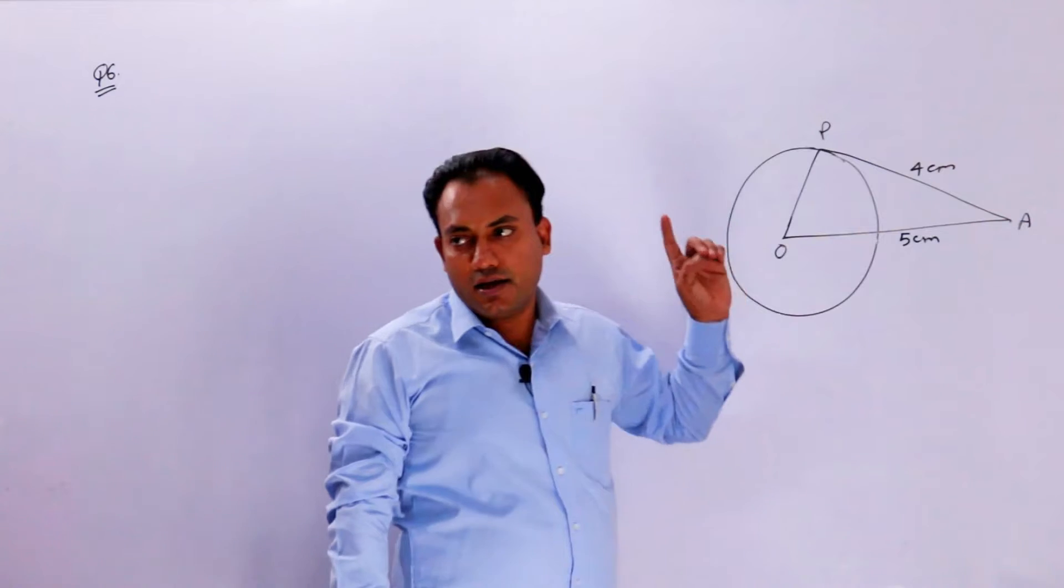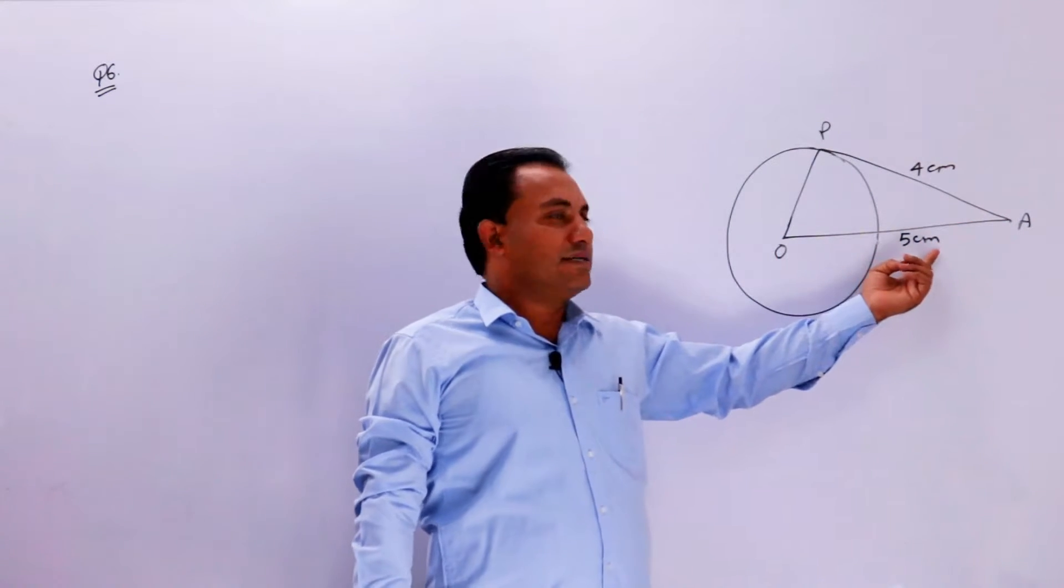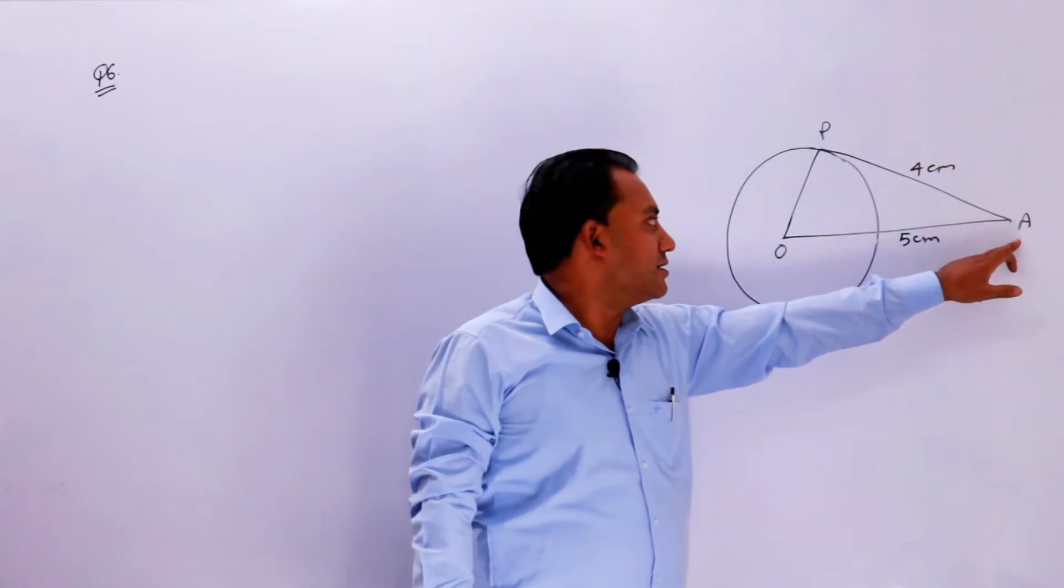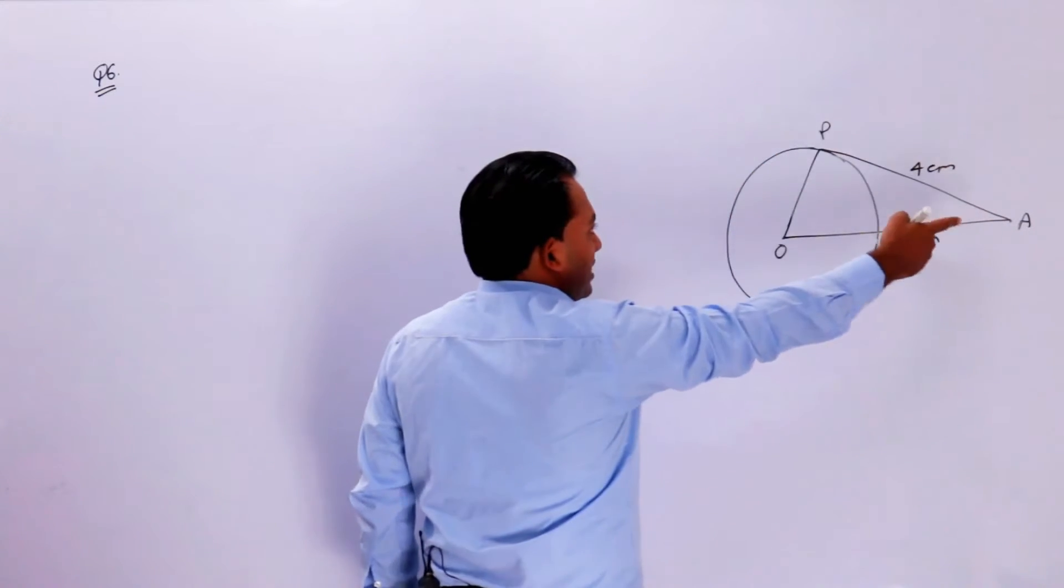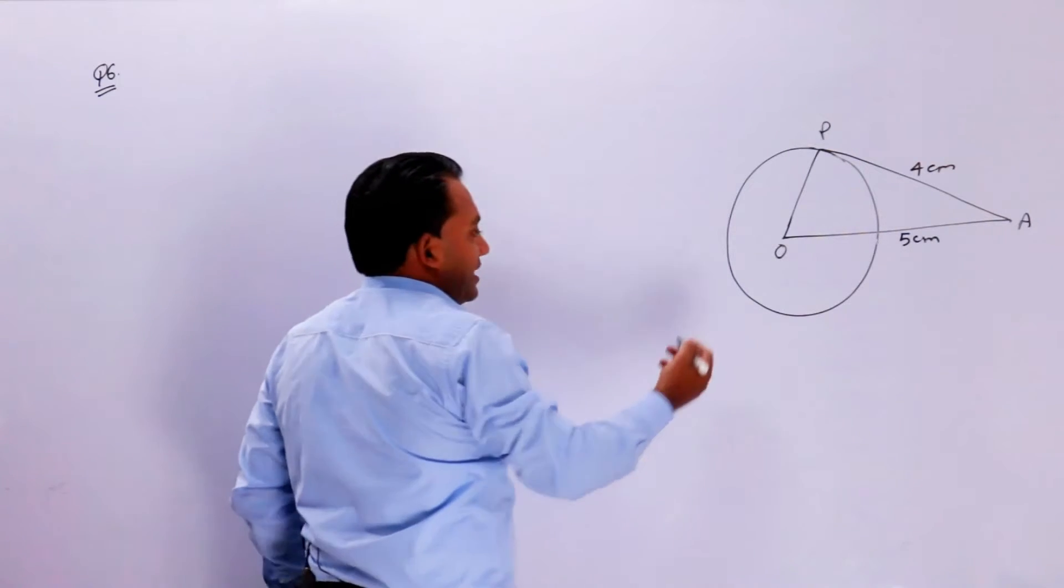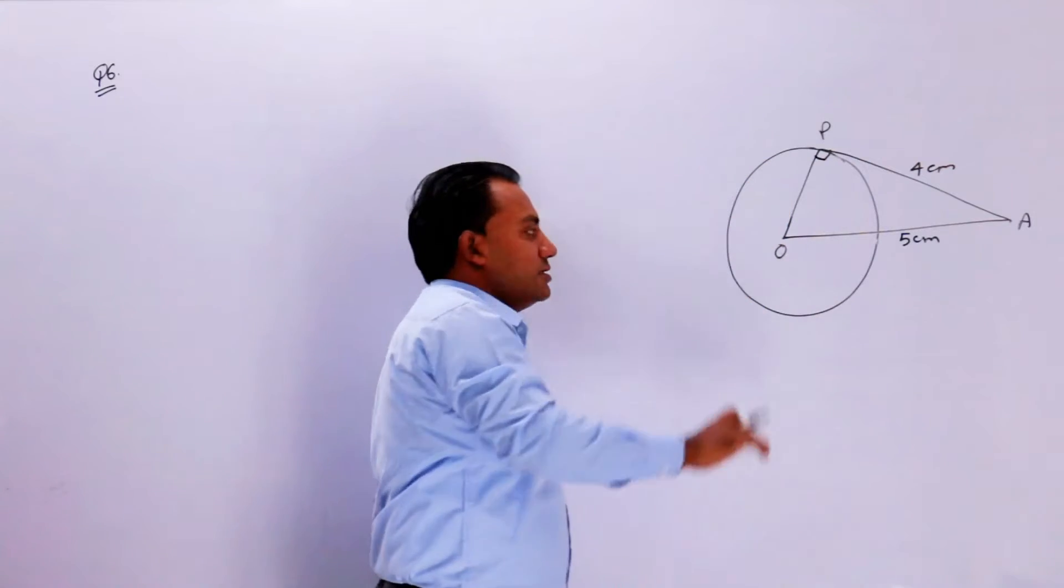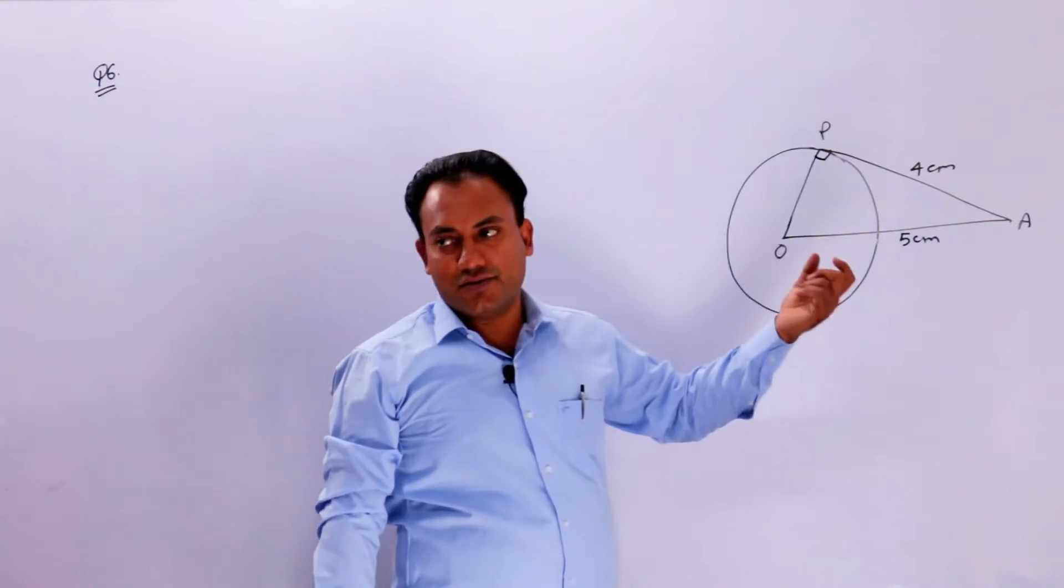In question number 6, the distance from point A is 5 centimeter and the length of the tangent is 4 centimeter. We will find the radius of the circle. The angle is 90 degrees.